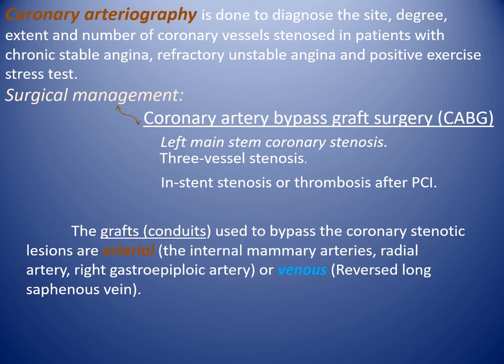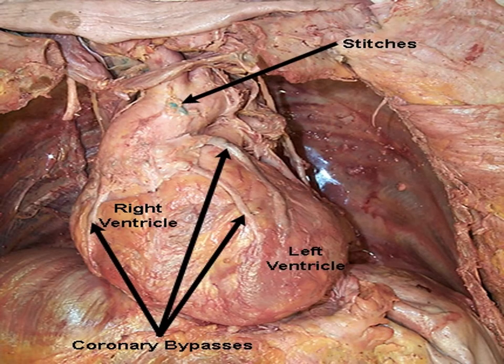Surgical management: coronary artery bypass graft surgery. Indications include left main stem coronary stenosis, three-vessel stenosis or more, and stent stenosis or thrombosis after PCI. The graft conduit used to bypass coronary stenotic lesions is either arterial — such as the internal mammary artery, radial artery, or right gastroepiploic artery — or venous, like the reversed long saphenous vein graft.